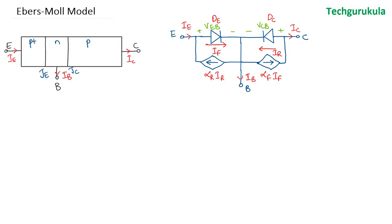The diodes shown here are assumed to be ideal diodes with ideal diode current equations. Having said that, let's write the equations for emitter current, collector current, and base current. Starting with the emitter current: I_E equals I_F minus α_R times I_R. I_F is the diode current equation of the emitter diode, which is I_E0 times (e^(V_EB/V_T) minus 1).